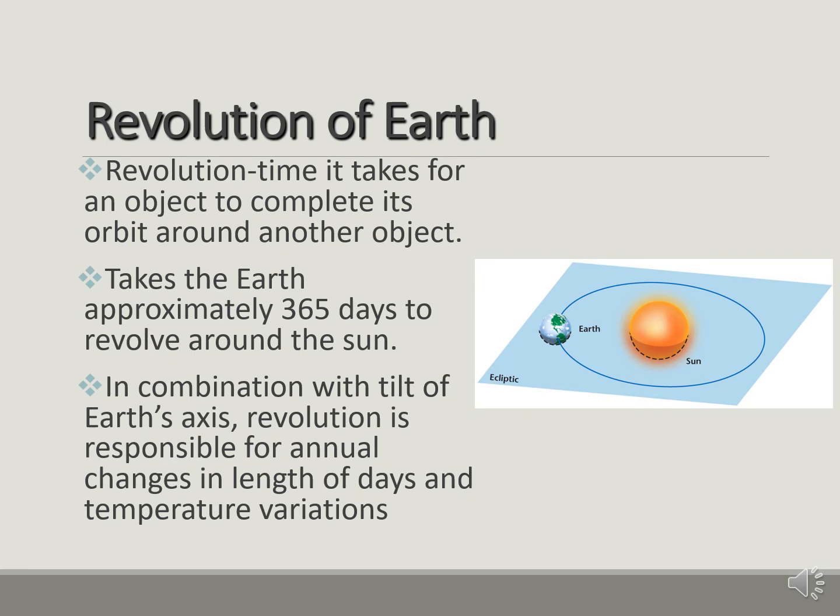Now we talked about the rotation, now we have to talk about the revolution of the Earth. So revolution is the time it takes for an object to complete an orbit around another object. This is when we say the Earth revolves around the sun. The sun doesn't revolve around us, we go around the sun. It takes 365 days.